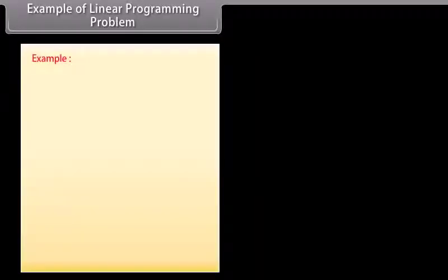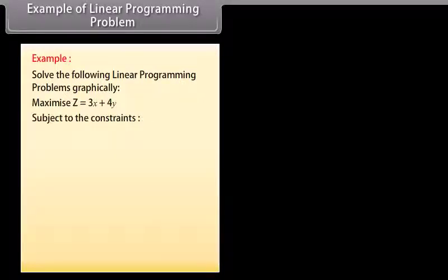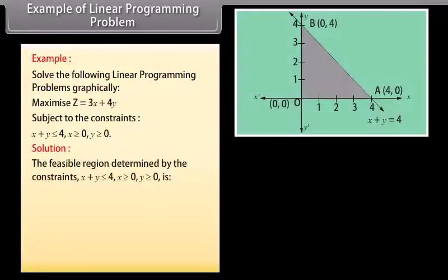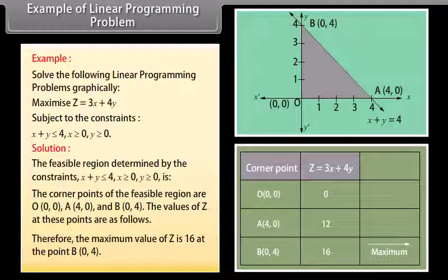Example: Solve the following linear programming problem graphically. Maximize Z equals 3X plus 4Y, subject to the constraints: X plus Y ≤ 4; X ≥ 0; Y ≥ 0. Solution: The feasible region determined by the constraints X plus Y ≤ 4, X ≥ 0, Y ≥ 0 is given in the figure. The corner points of the feasible region are O(0,0), A(4,0), and B(0,4). Therefore, the maximum value of Z is 16 at point B(0,4).